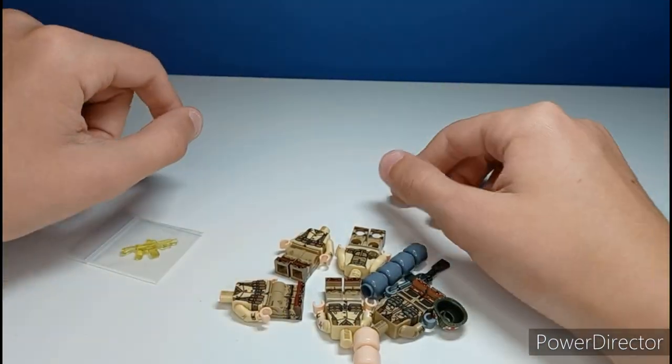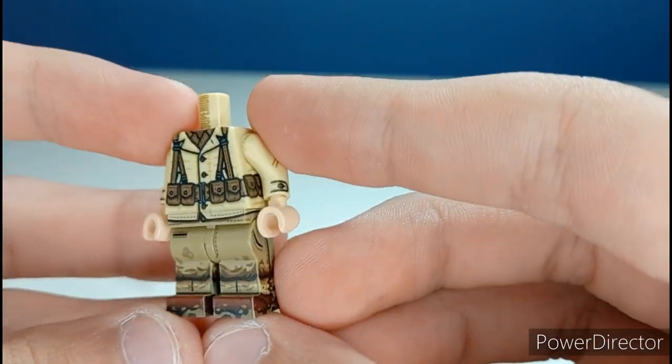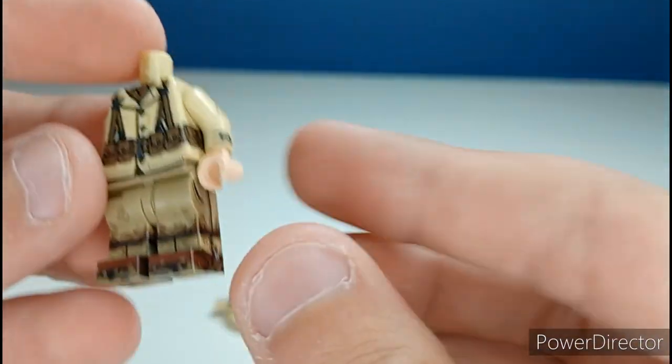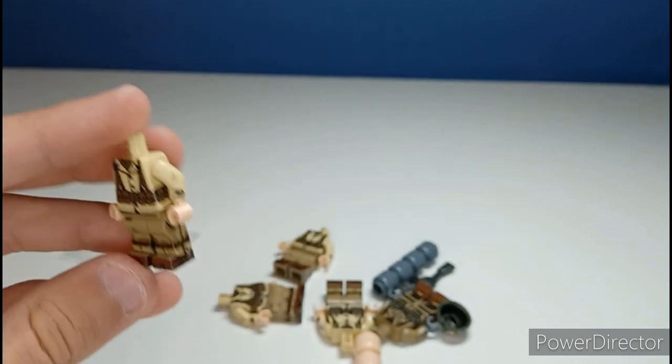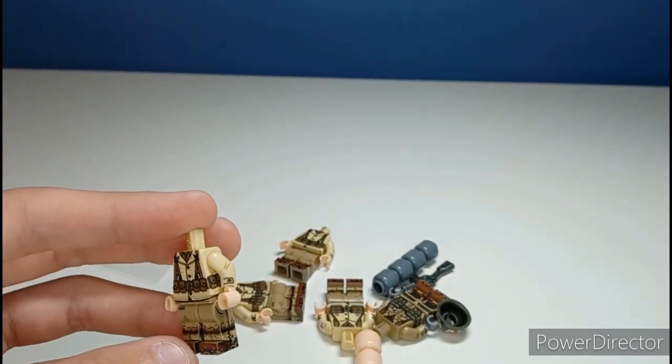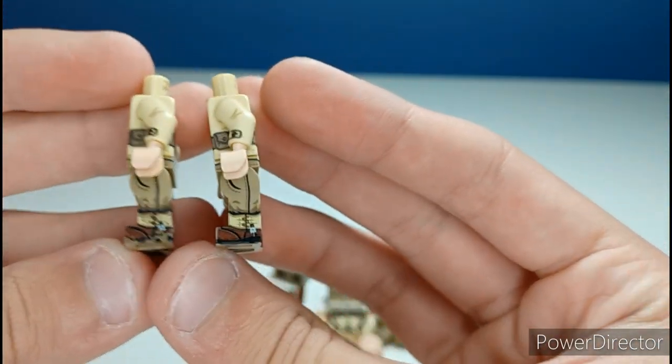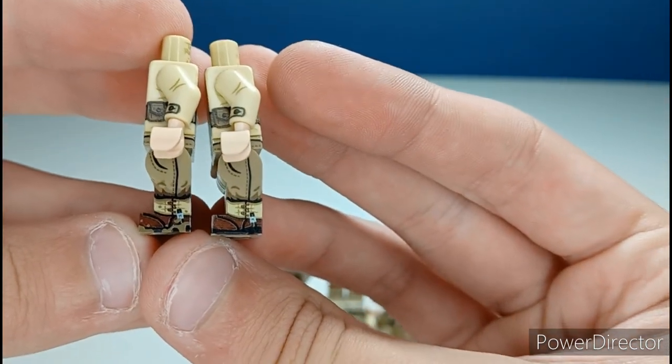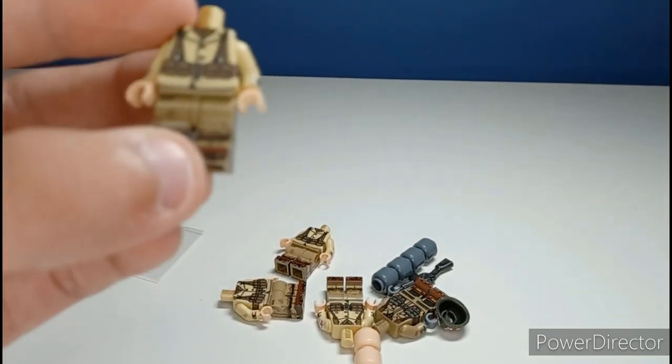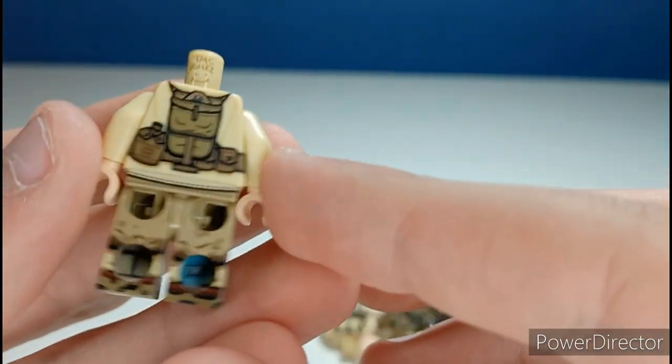First things first we have an M1 Garand M1941 US body with 360 printing on the legs. I have another M1 Garand that's the old one, so the difference between these is that this one has mud on its boots, the new one, and the old one doesn't.